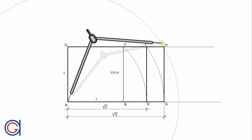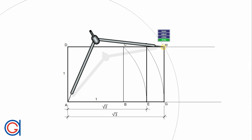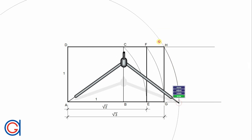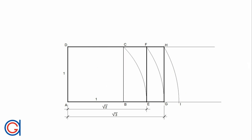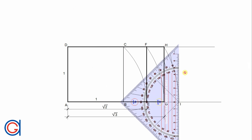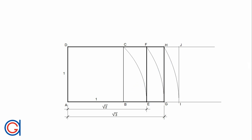We continue by setting the compass on vertex A and with a radius AH, we are going to describe an arc to the right until it cuts the bottom horizontal line at a new point, which we will call I. Now we will draw a perpendicular vertical line from point I, obtaining a new vertex J of the root 4 rectangle. In other words, this is a 1:2 rectangle because the square root of 4 is 2. Finally, we draw in a thicker line this root 4 rectangle, which is A, I, J, D, and we mark on the bottom the length, the square root of 4.